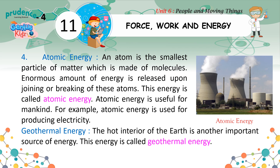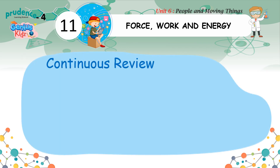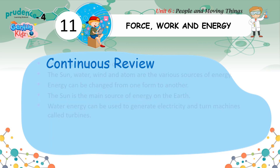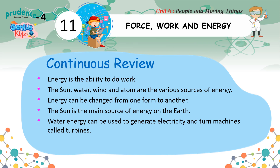Atomic energy is useful for mankind. For example, atomic energy is used for producing electricity. Geothermal Energy: The hot interior of the earth is another important source of energy. This energy is called geothermal energy. Key review points: All movements are the result of some kind of force. Force is a push or pull. Work is done when force is applied to an object to move it. Machines are tools or devices used for converting the motion of force to carry out more work with greater speed and less strain. Energy is the ability to do work. The sun, water, wind and atom are the various sources of energy. Energy can be changed from one form to another. Water energy can be used to generate electricity and turn machines called turbines.